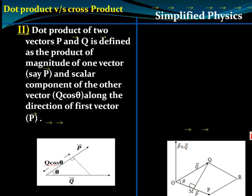The dot product of two vectors p and q can also be defined as the magnitude of the first vector multiplied by the scalar component of the second vector along the direction of the first vector. For example, the magnitude of p and the scalar component of q along p gives the dot product, or equivalently the magnitude of q and the scalar component of p along q also gives the dot product.